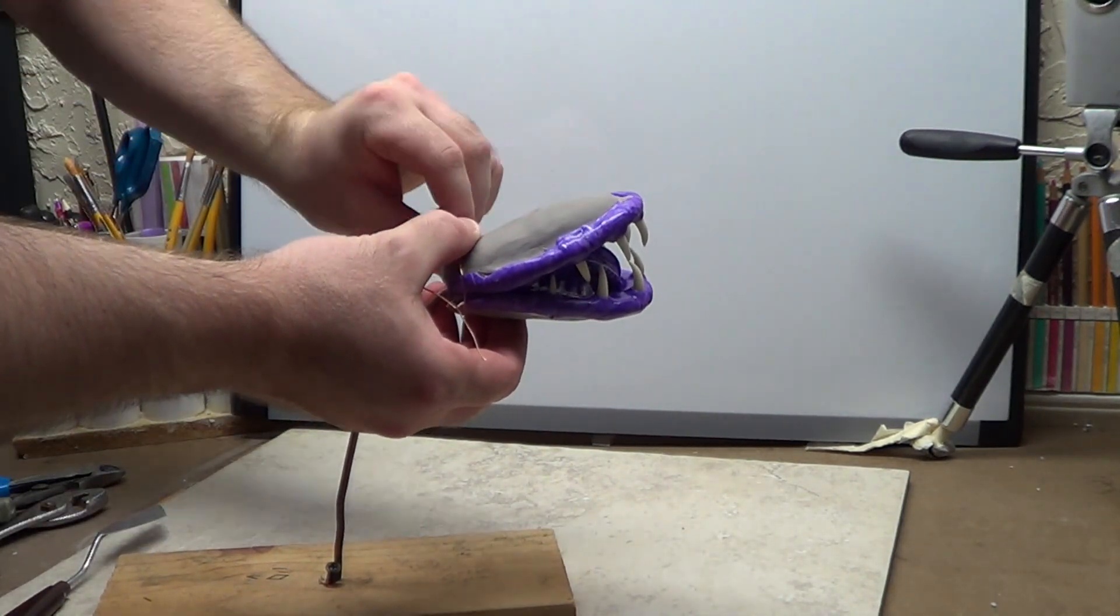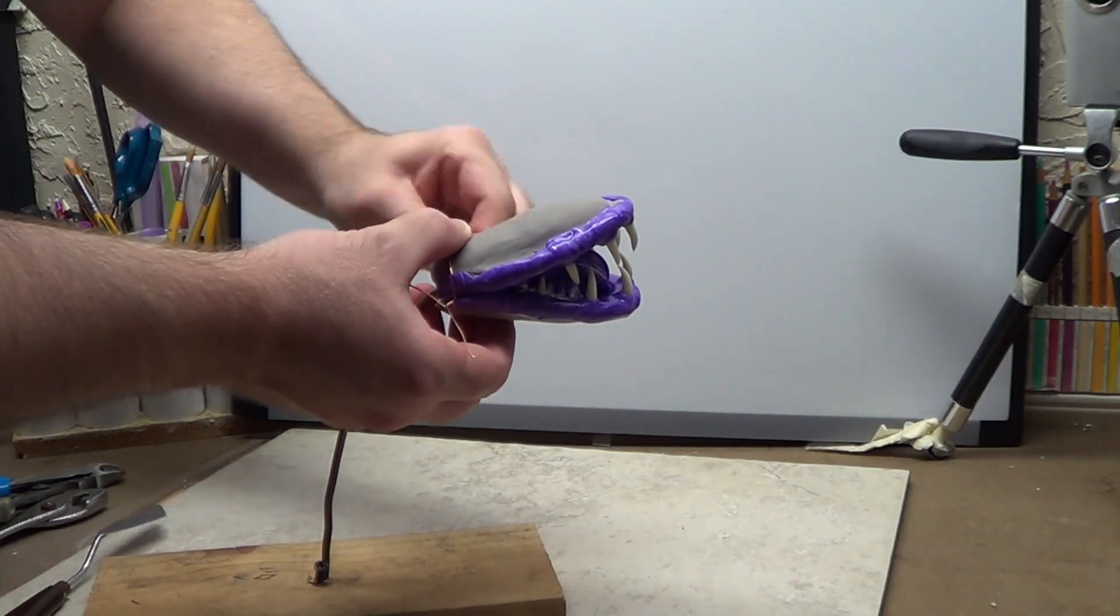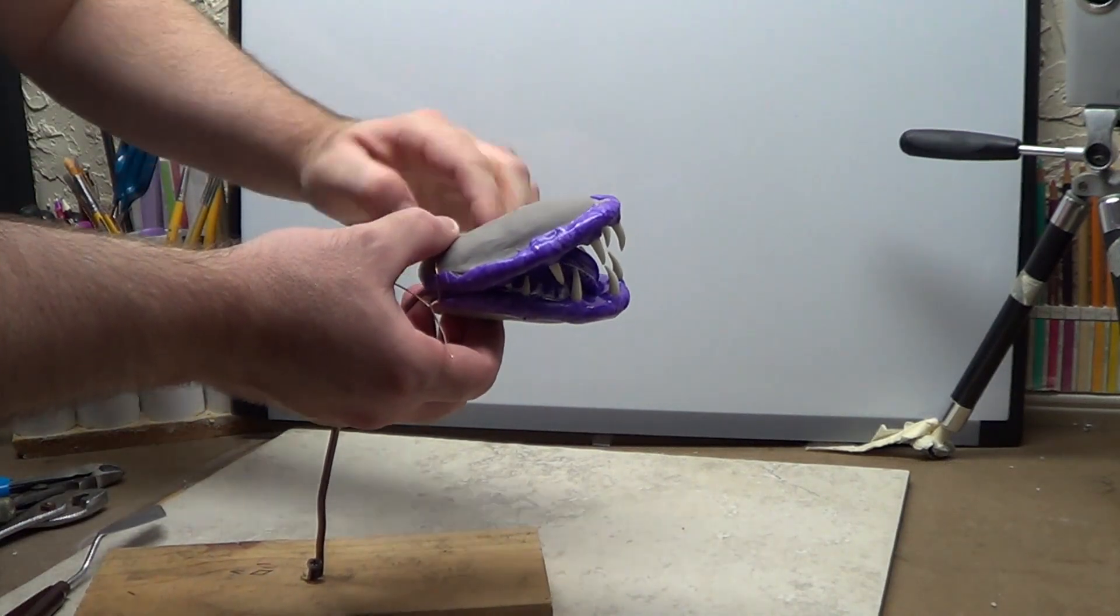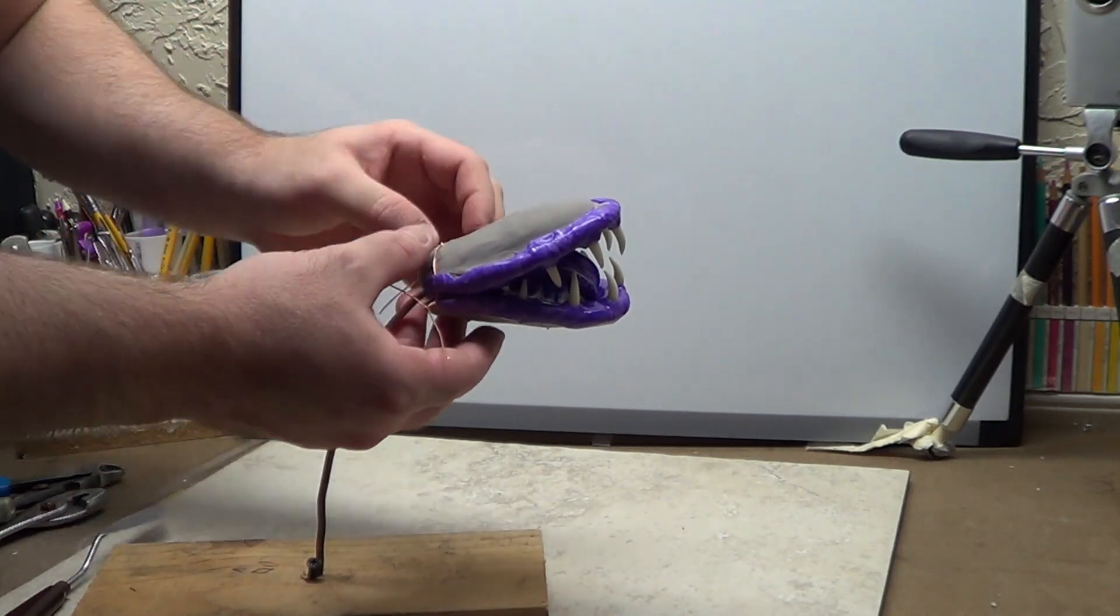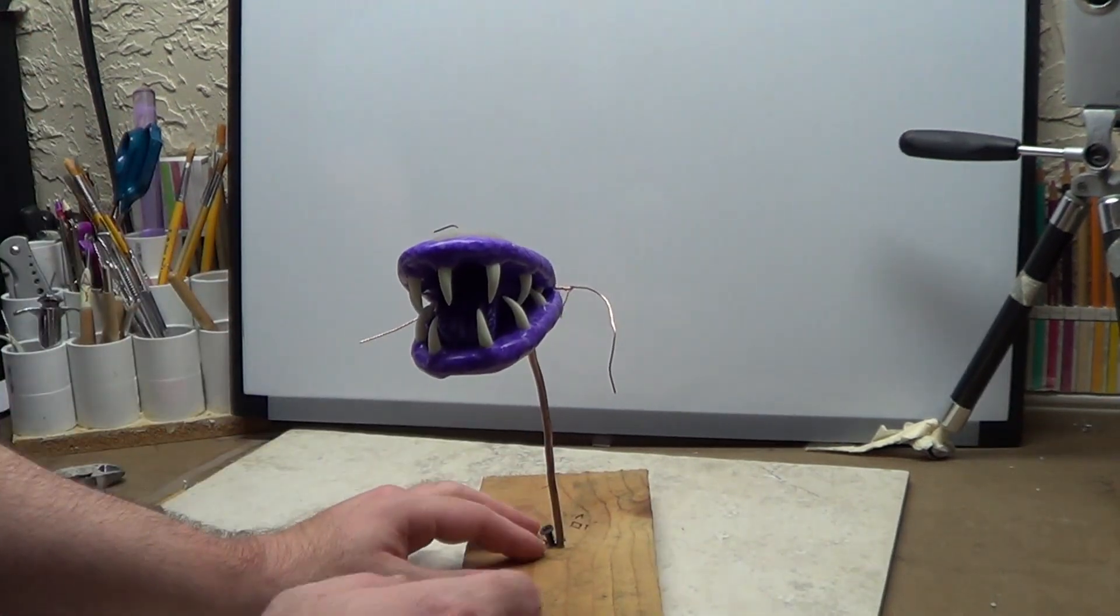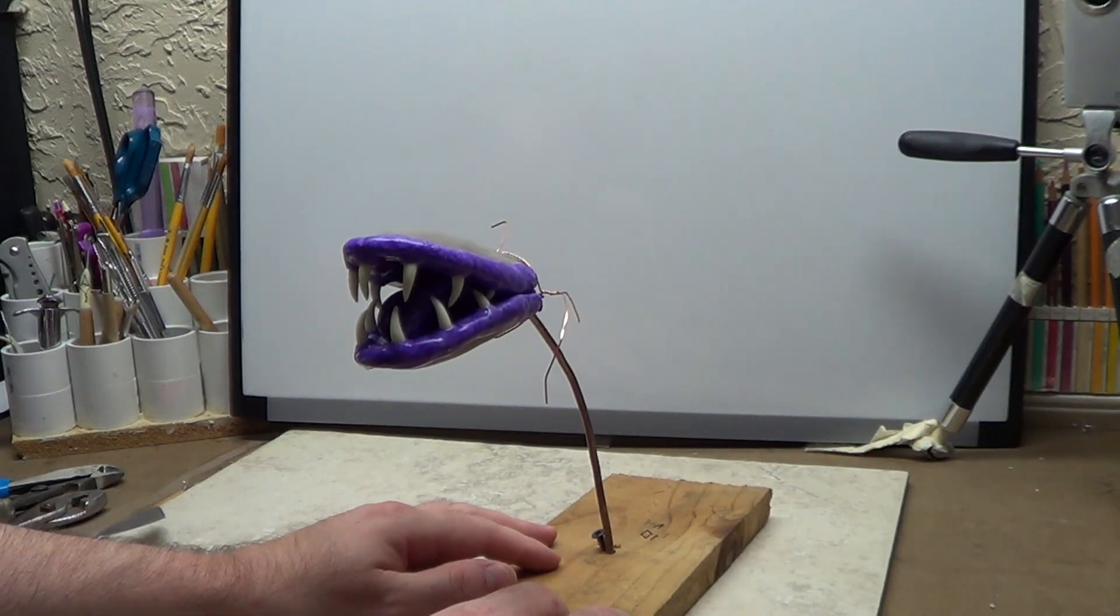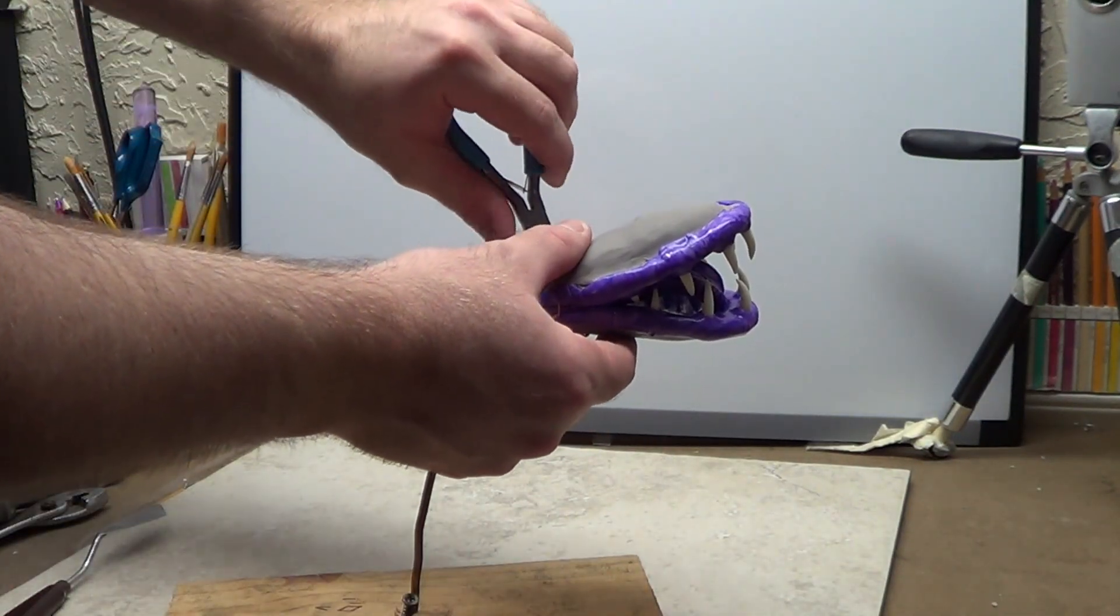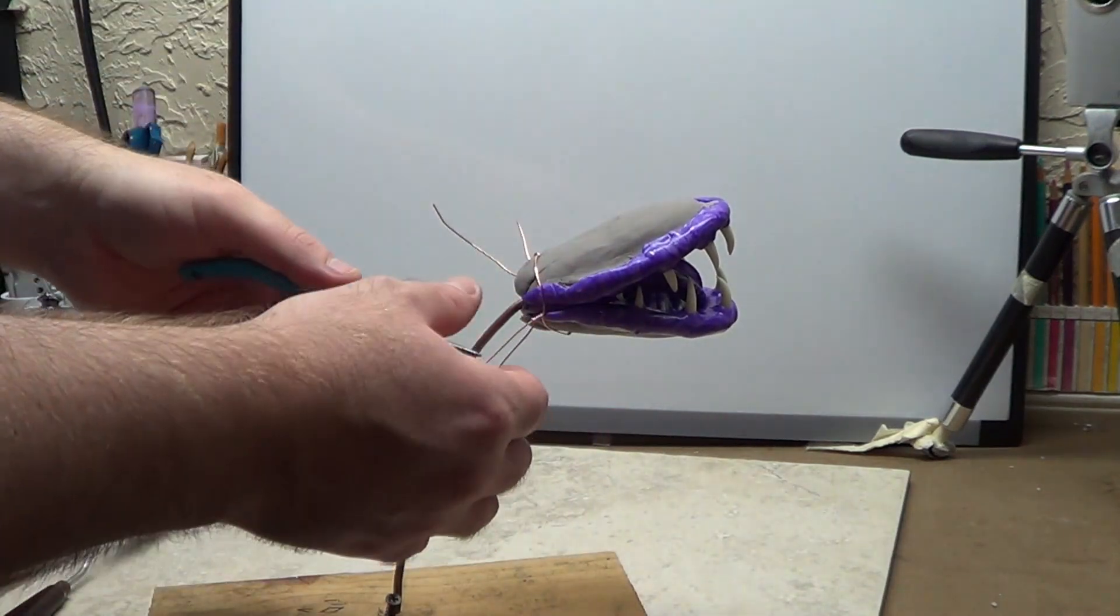I suppose I should be paying attention to what it's doing by looking at it head on. But I'm trying to do this as a good camera angle. Which is not always the best idea when sculpting. Tighten it down just a little bit. Couple little more twists. I don't want to do it too much.